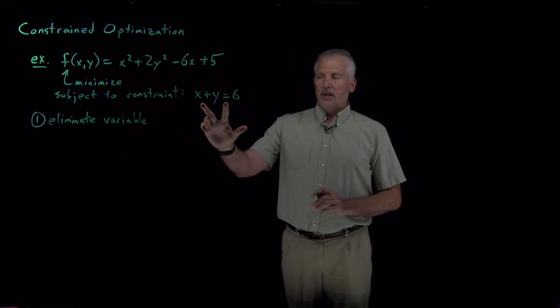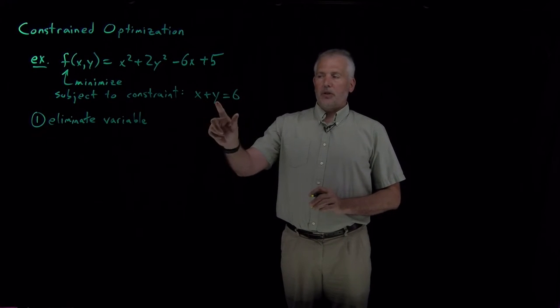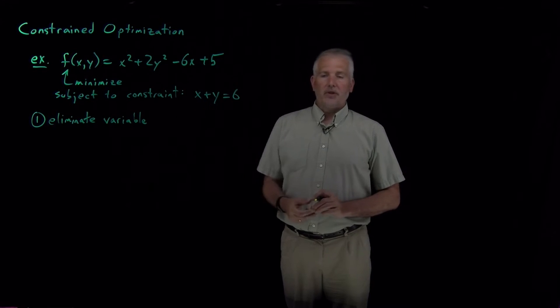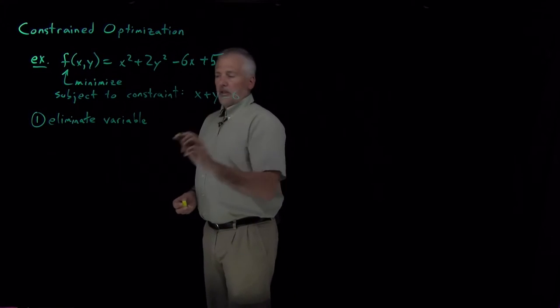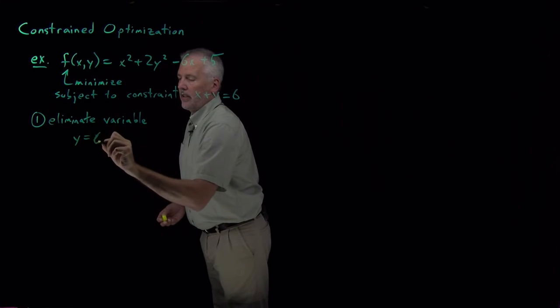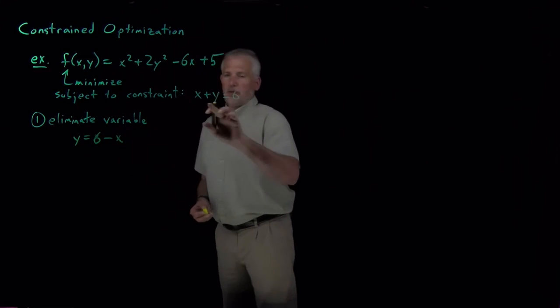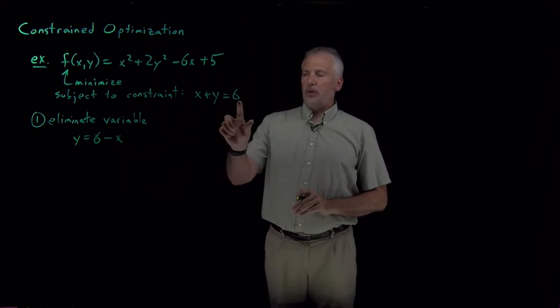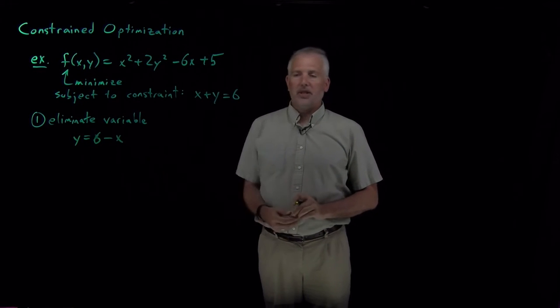In this case, we have one constraint that tells us something about y relative to x and vice versa. So we can use this constraint. If I rearrange that constraint equation, x + y = 6 tells me that y always has to be 6 - x.